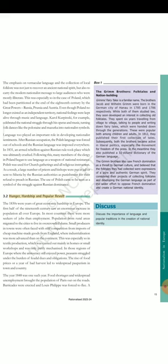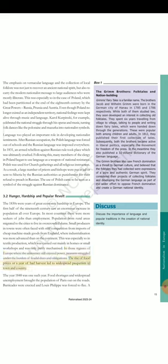Section 3.2: Hunger, hardship and popular revolt. The 1830s were years of great economic hardship in Europe. The first half of the 19th century saw an enormous increase in population all over Europe. In most countries there were more seekers of jobs than employment. Population from rural areas migrated to the cities to live in overcrowded slums. Small producers in towns were often faced with stiff competition from imports of cheap machine-made goods from England, where industrialization was more advanced than on the continent. This was especially so in textile production, which was carried out mainly in homes or small workshops and was only partly mechanized. In those regions of Europe where the aristocracy still enjoyed power, peasants struggled under the burden of feudal dues and obligations. The rise of food prices or a year of bad harvest led to widespread pauperism in town and country. The year 1848 was one such year. Food shortages and widespread unemployment brought the population of Paris out on the roads. Barricades were erected and Louis-Philippe was forced to flee.